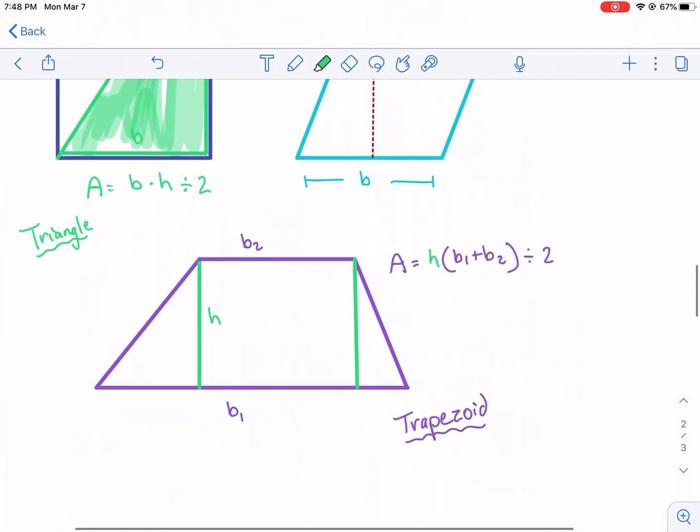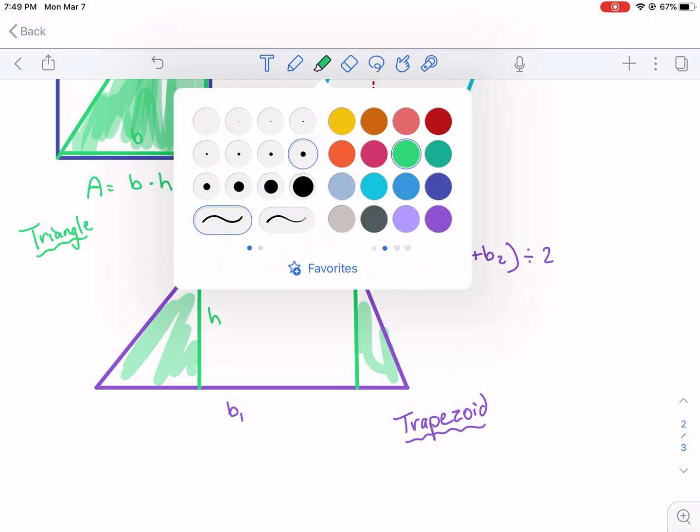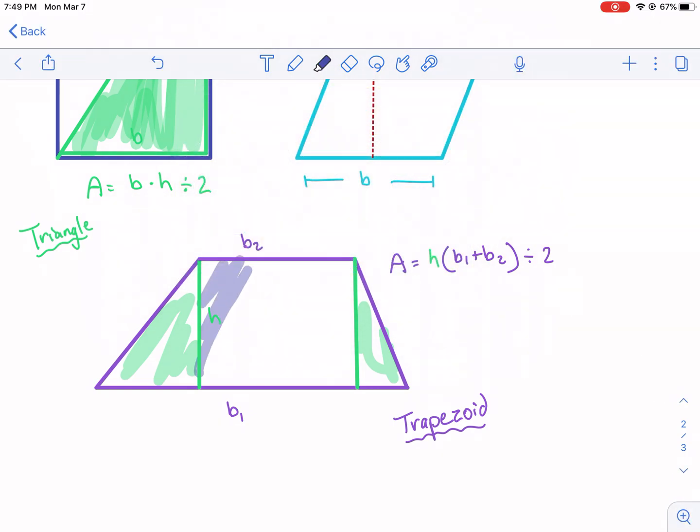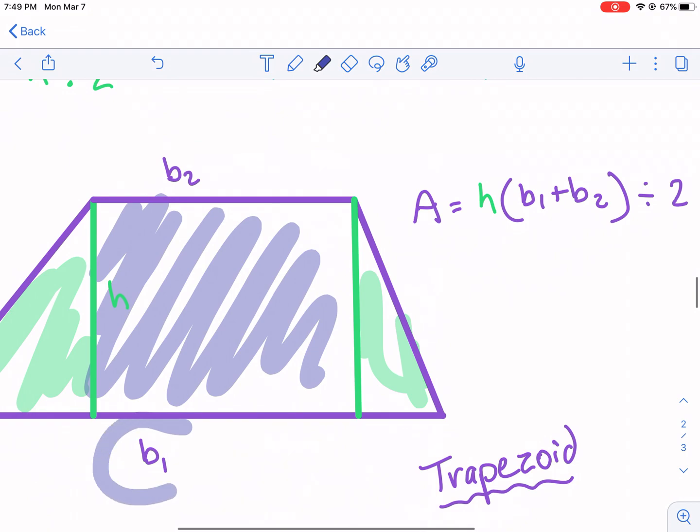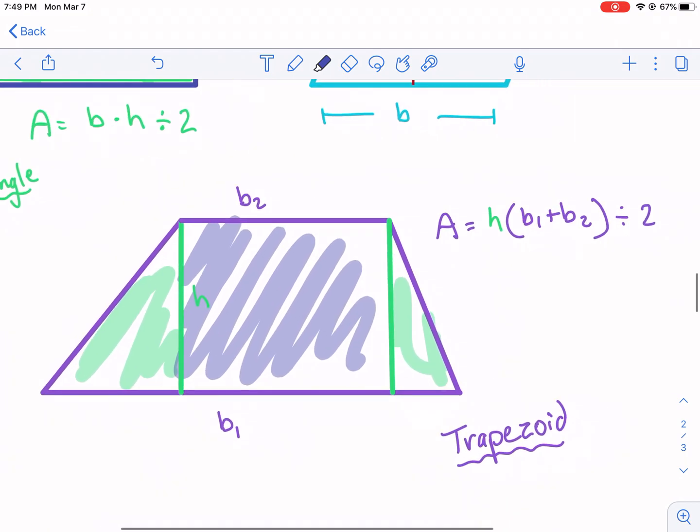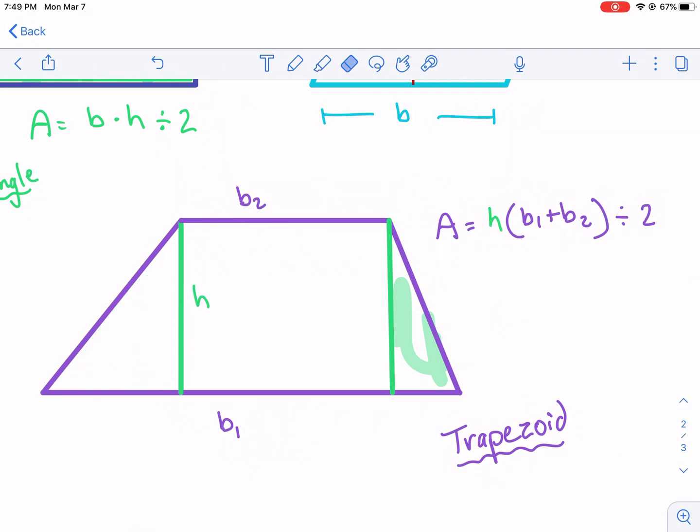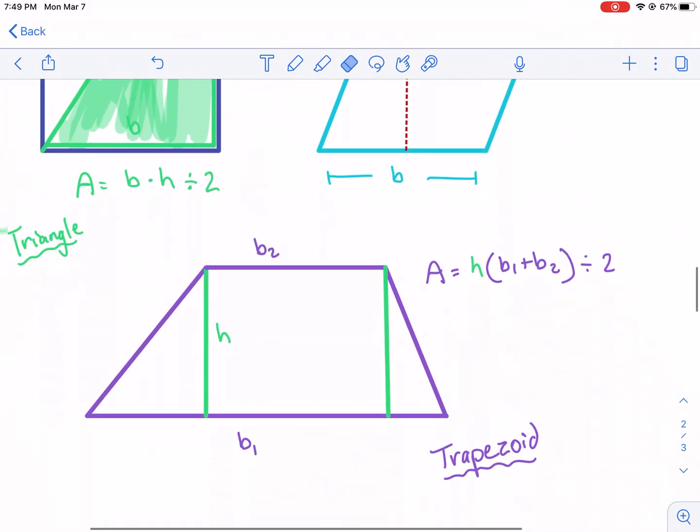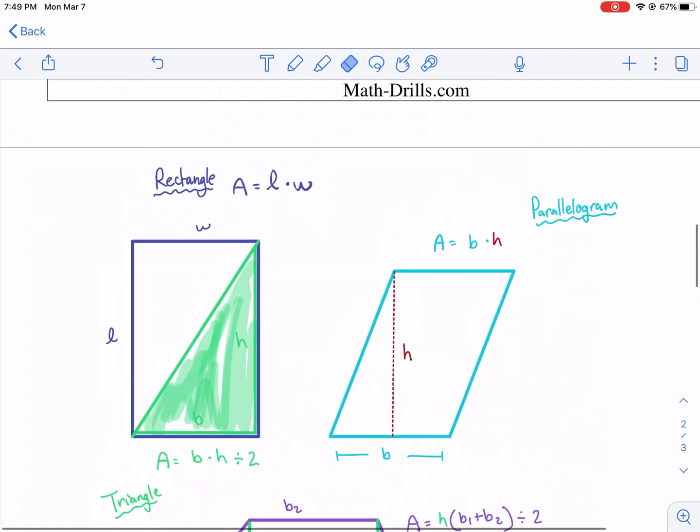And then finally the trapezoid, this guy is kind of a compound shape here. We have some triangles, two triangles, and we have a rectangle here. So that's why it's a little bit more complicated than it was before. And this is our equation for the trapezoid. Notice that we're adding these two bases. This one's B1 and B2. It doesn't matter which one you call which as long as you add them together as designated here. You're going to multiply by this distance H. That's the distance between the two bases. And you're going to divide by two because it kind of borrows that from the triangle.